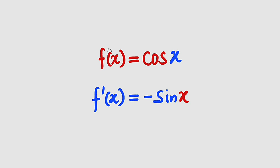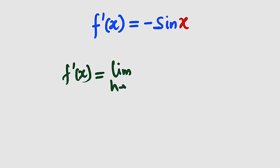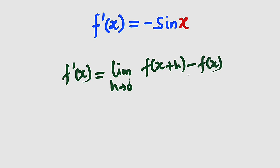We know that if we are given a function f of x which is equal to cosine x, once we differentiate it, you are going to get negative sine x. So now let us prove it from the first principle. Remember that from definition, f prime of x is equal to the limit as h approaches 0 of f of x plus h minus f of x divided by h.